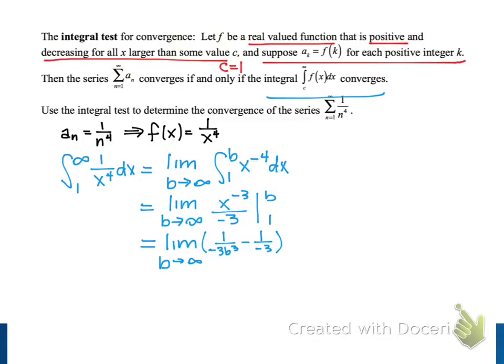And so to evaluate this limit now, let's consider this term here, the 1 over negative 3 b cubed. As b increases, this denominator is also going to increase.